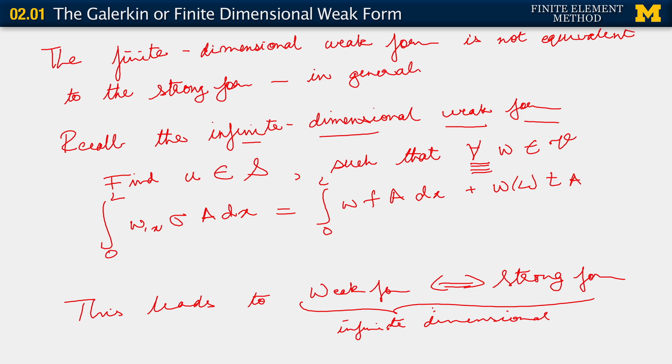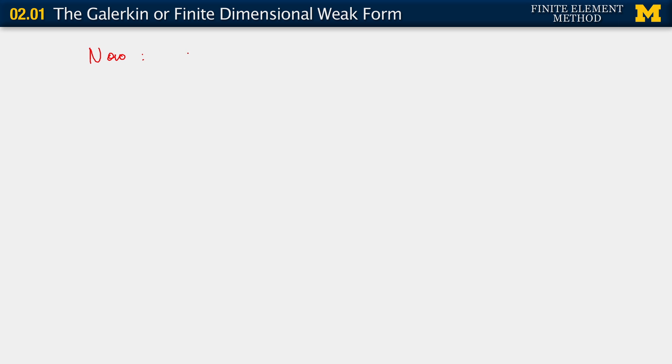We've abandoned that now. In what manner have we abandoned it? First of all, by saying that we are now looking for solutions belonging to a smaller space, S^H, and furthermore, that the finite dimensional weak form holds for certain weighting functions W^H belonging to a smaller space, V^H. So we're saying that U^H belongs to S^H, and W^H belongs to V^H, which is a subset of V. As a result, we have lost the ability to invoke the argument that the weak form holds for a sufficiently large space of functions. And therefore, we cannot always make the argument that the strong form is implied by the weak form.